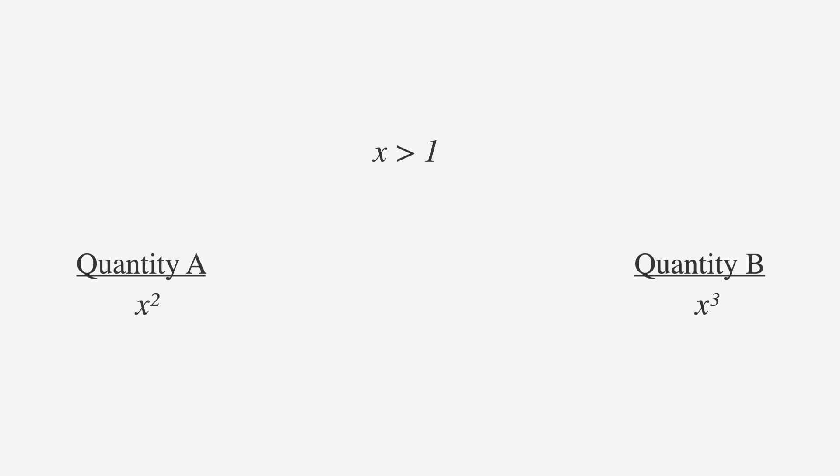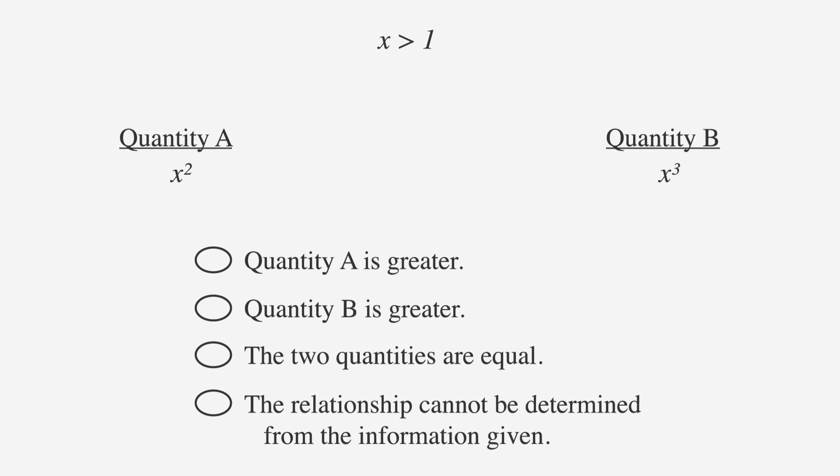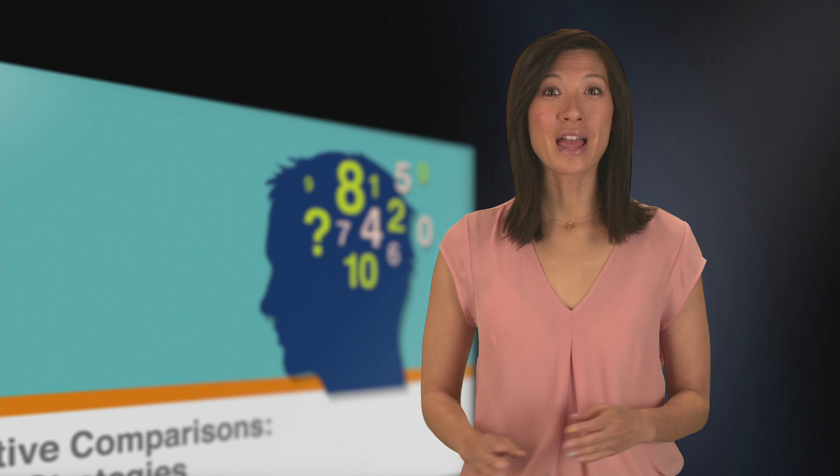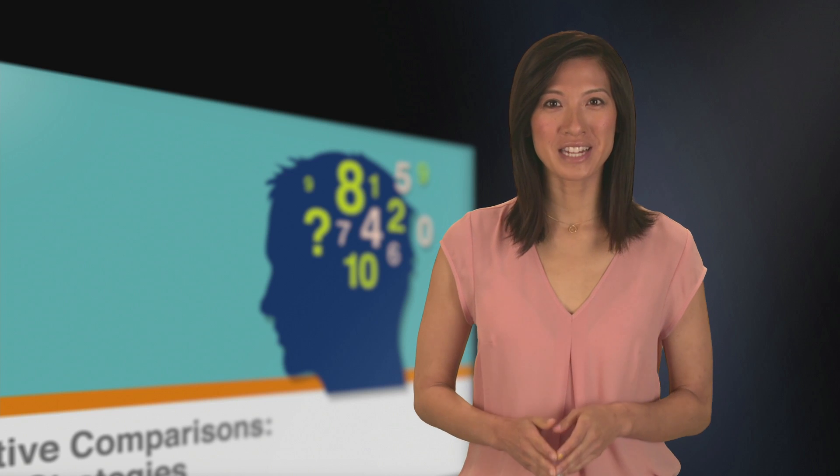The layout is always the same. The answer choices for quantitative comparisons are always the same as well. Let's bring them up. The answer choices are that quantity A is greater, that quantity B is greater, that the two quantities are equal, and finally, that the relationship cannot be determined from the information given.